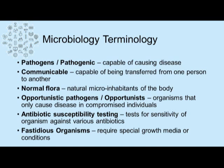Pathogens, or something that is pathogenic, is capable of causing disease. Communicable means that the organism is capable of being transmitted from one person to another. Normal flora is the natural microbial inhabitants of the human body. This could be skin flora, oral flora, urogenital flora, or intestinal flora.